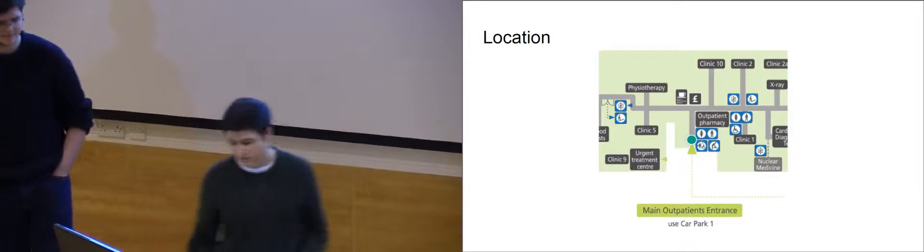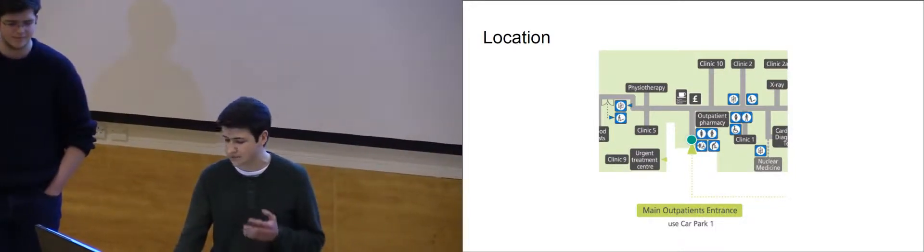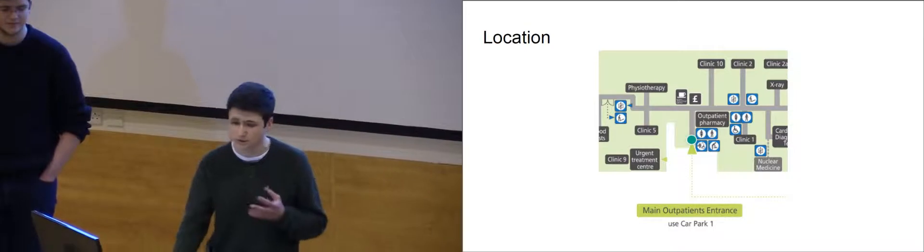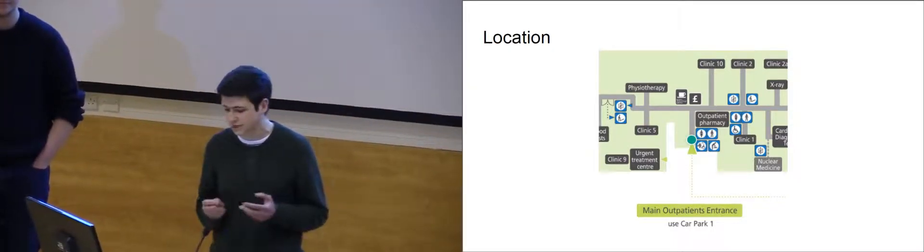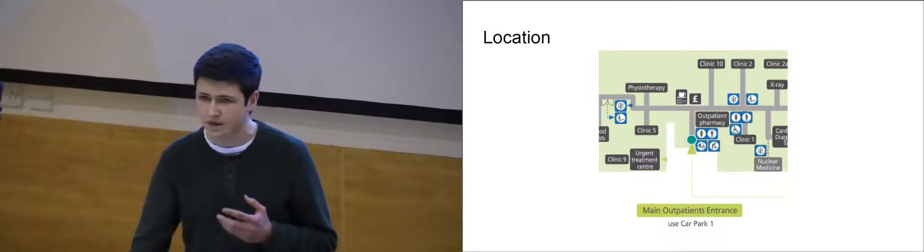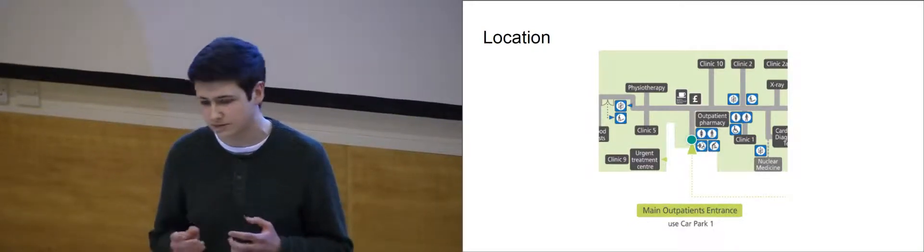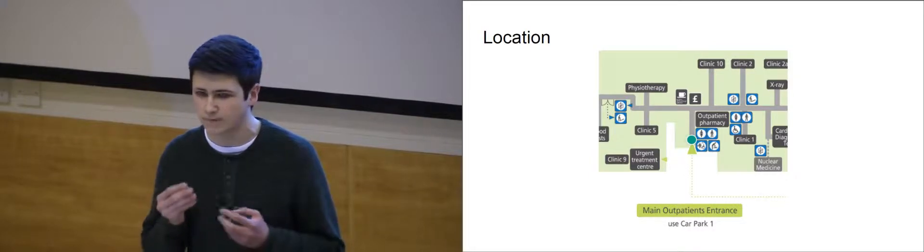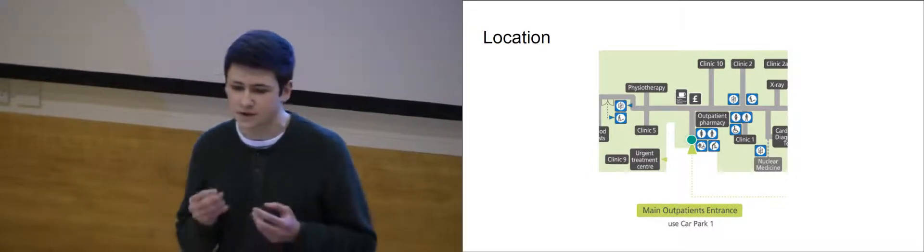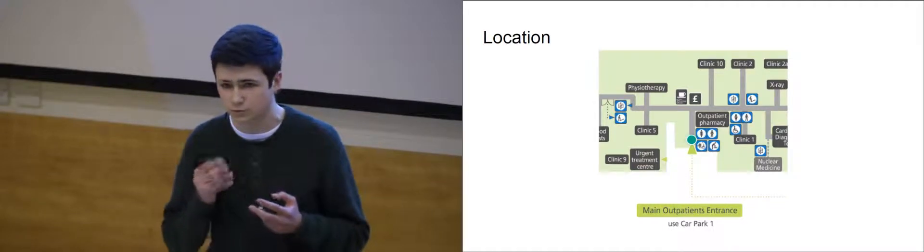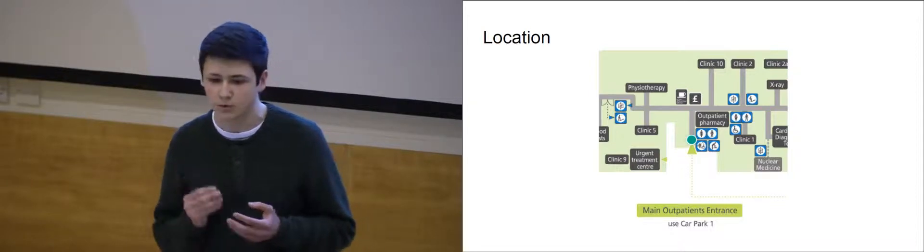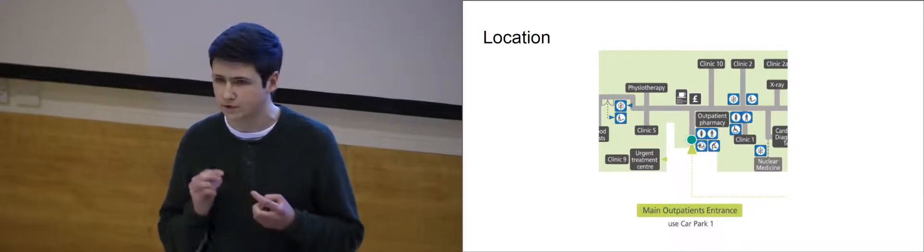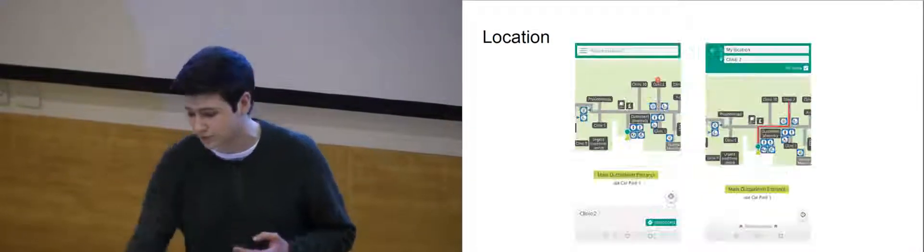We knew from the start that getting good location data was going to be an issue as GPS wasn't going to work very well in a large concrete building such as Addenbrooke's. So we discussed other models we could use. In the end, it turned out that Google Location Services actually integrates Wi-Fi fingerprinting inside. So we chose to do that instead. We have our own Wi-Fi fingerprinting model that we would hope to use in the future, which is bespoke and that would allow us to get different floor levels as well. But we didn't have the time or access to the hospital to train our model enough to use. So we're using Google Location Services.